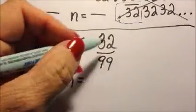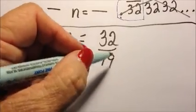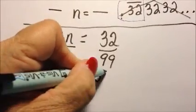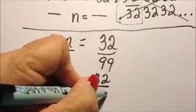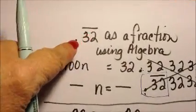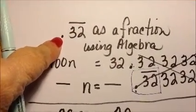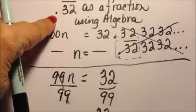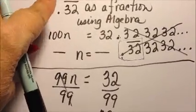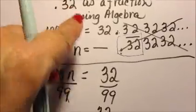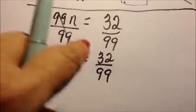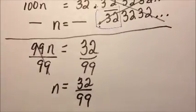This won't reduce so my answer is 32 over 99. So 0.32 repeating as a fraction is 32 over 99.